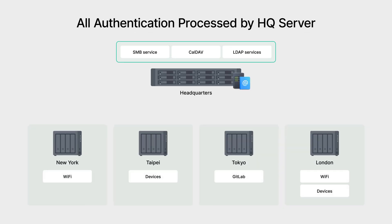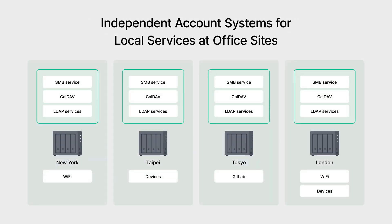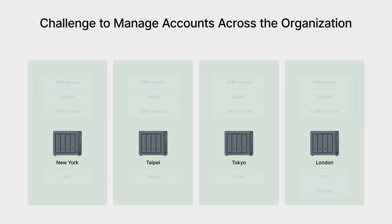Previously, your organization may have relied on a central LDAP server at headquarters to manage access to key services across the company. For branch offices, this often means connecting to HQ through a VPN to authenticate. But VPN connections can become a bottleneck, slowing things down. When all authentication requests go through a single centralized server, it can lead to delays and congestion. For local services like Wi-Fi or on-premises LDAP, branches often face two scenarios: some set up their own separate authentication systems, while others have none at all, leaving individual servers to handle their own accounts — making access control fragmented and harder to manage.